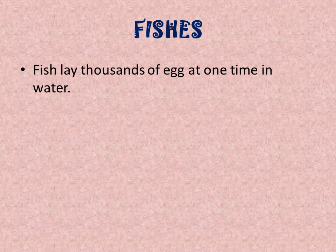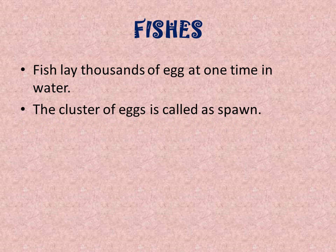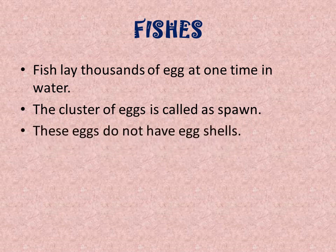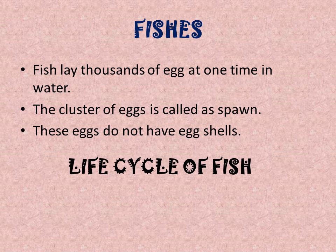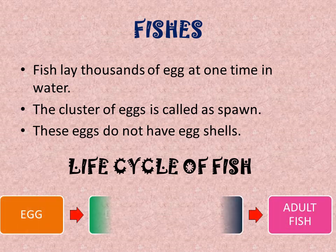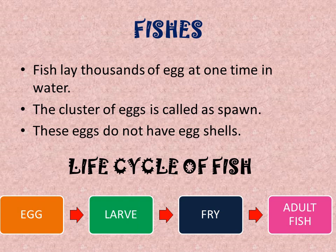Fishes also reproduce by laying eggs. Fish lay thousands of eggs at one time in water. The cluster of eggs is called spawn. These eggs do not have egg shells. The life cycle of a fish: the fish lay eggs, then they develop into larvae, then larvae convert into fry, and then fry convert into the adult fish.